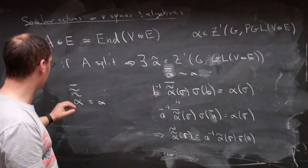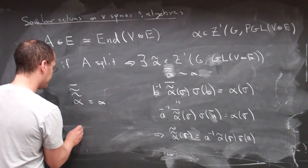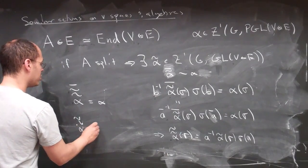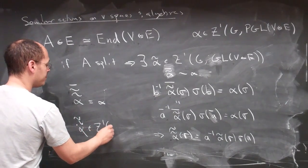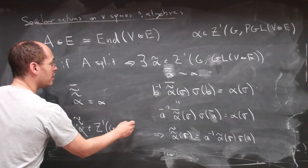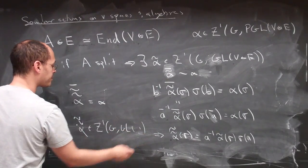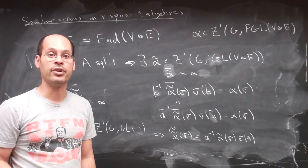And so what that means is that my alpha double tilde is a good choice of something in Z1 of GL of V tensor E, whose image is, on the nose, alpha.